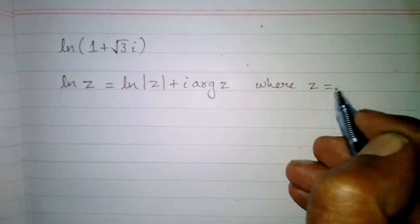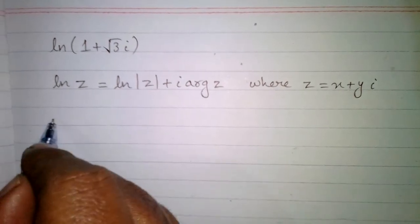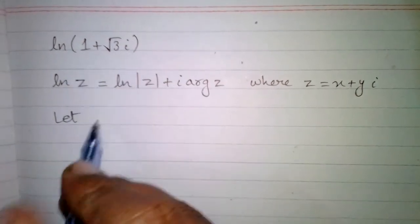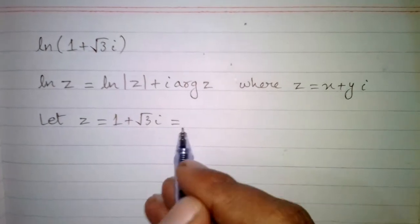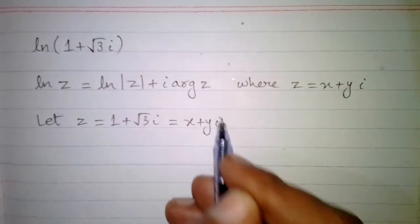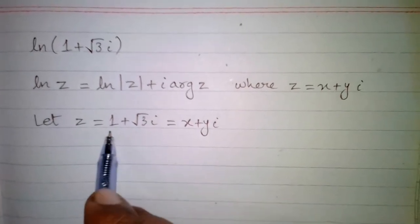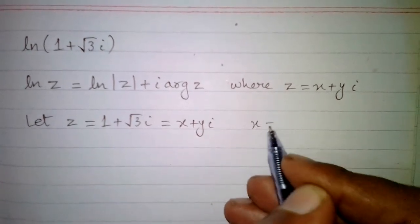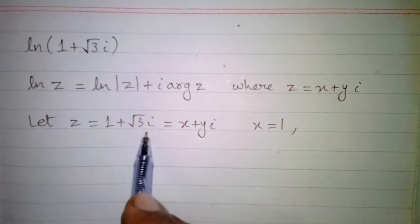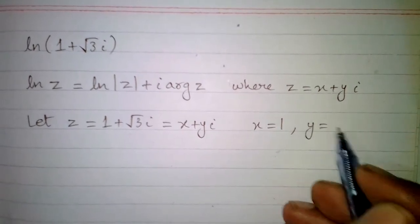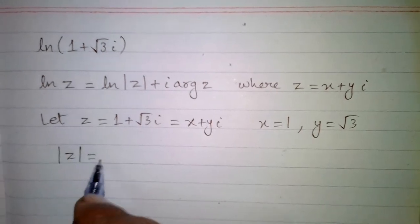Here z is a complex number x plus y iota. Now first we will find the modulus of z. Suppose this complex number is z, so z is equal to 1 plus root 3 iota, or we can say that this number is equal to x plus y iota. Comparing real and imaginary parts: the real part x equals 1, and the imaginary part y equals root 3.